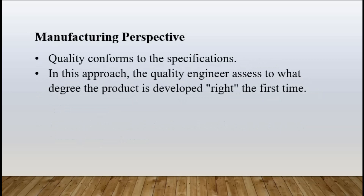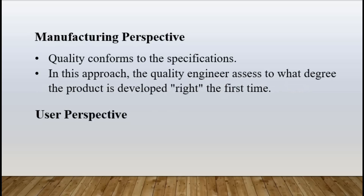Manufacturing perspective. Here, quality is defined in terms of conformance to the specifications. In this case, an organization doesn't want a variety of people throughout the development of a product trying to make judgments about what the customer needs or wants. The quality level of a product is determined by the extent to which the product meets its specifications. In this approach, the quality engineer assesses to what degree the product is developed right for the first time.